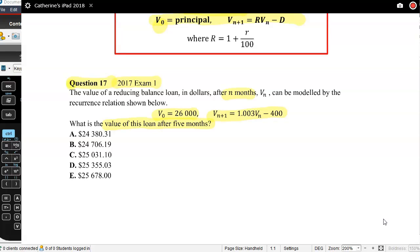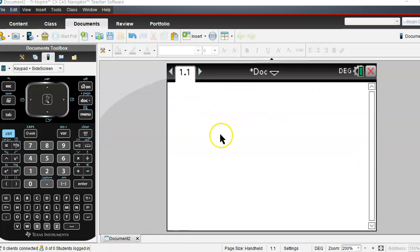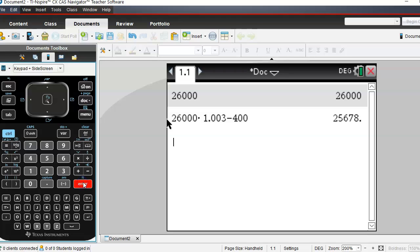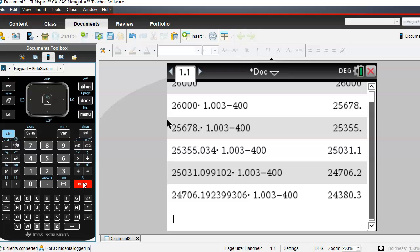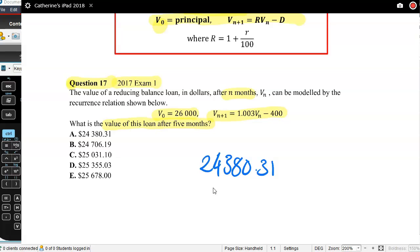Remembering that that's the monthly compounding interest rate, on our calculator let's type in 26,000 as our starting point, then times it by 1.003, take 400. So that's one month, two months, three months, four months, five months. And I will press enter to double check all of that rounding. So $24,380.31. And that is option A, which 82% of the state got correct.